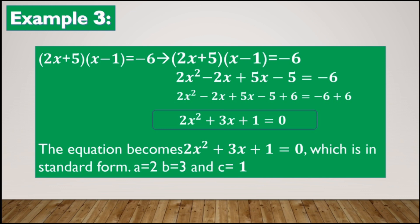Using FOIL: 2x times x is equal to 2x squared, 2x times negative 1 is equal to negative 2x, positive 5 times x is equal to 5x, and 5 times negative 1 is equal to negative 5. So we have 2x squared minus 2x plus 5x minus 5 is equal to negative 6. To make the right side equal to 0, we add positive 6 to both sides. The equation becomes 2x squared plus 3x plus 1 is equal to 0, which is in standard form, where a is equal to 2, b is equal to 3, and c is equal to 1.